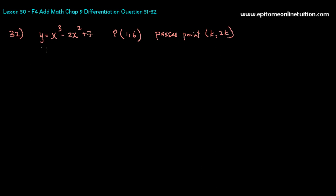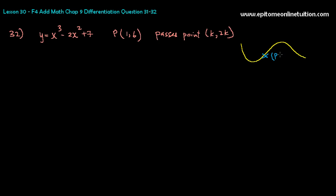It seems to be a fairly straightforward question because they say there's a curve and the normal passes through this point (K, 2K). So again, let's imagine this — say this is a cubic graph. A cubic graph will probably look like this. Say this is point P at coordinates (1, 6). So the equation of normal — the normal line is this, and the tangent would be this one.